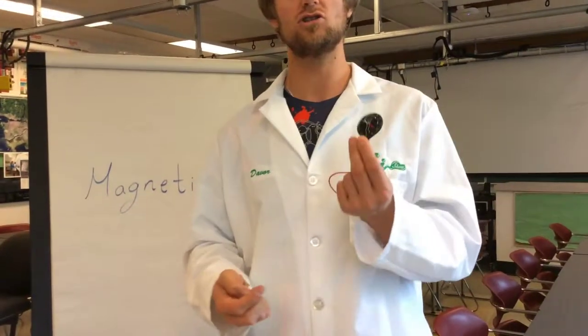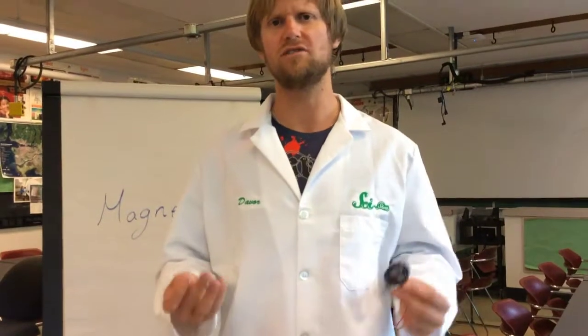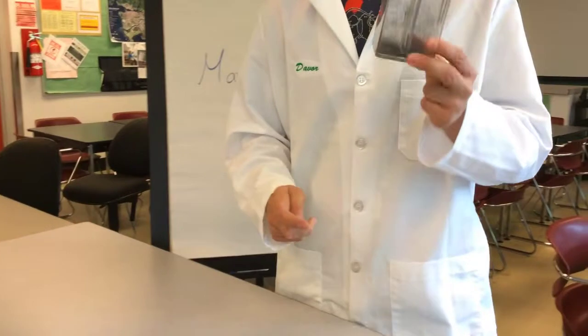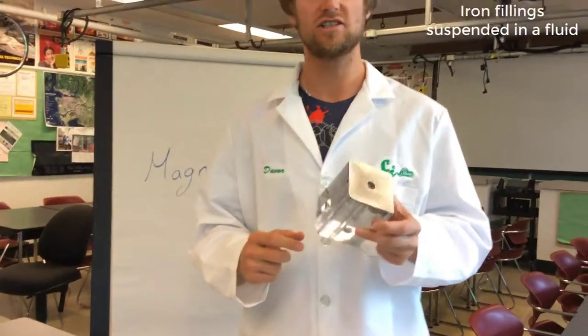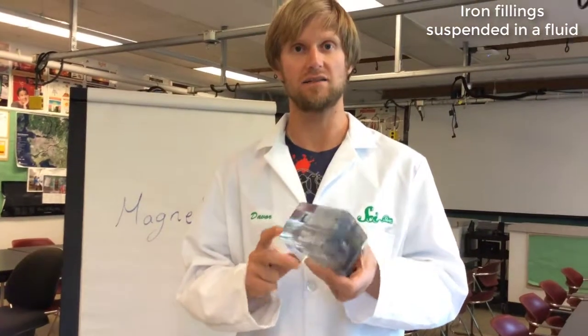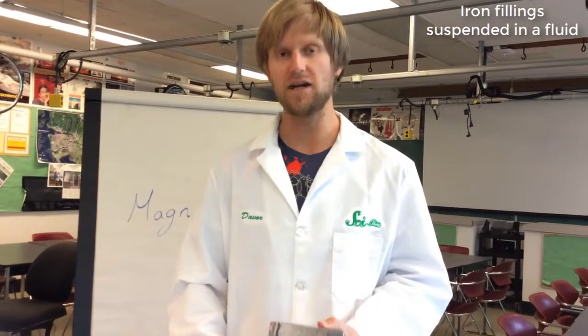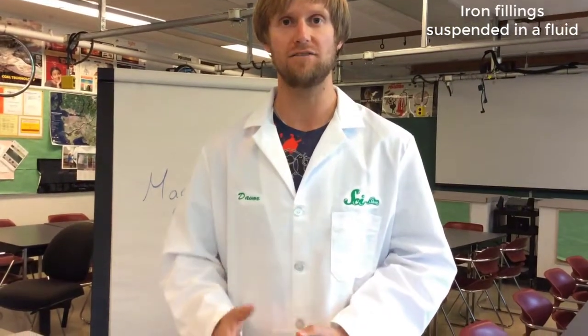Now it's difficult just to see with one magnet where all these field lines are, and that's why we have this over here. It's a glass block and inside it is a fluid in which is suspended some iron filings, and these iron filings are very sensitive to magnetic fields.